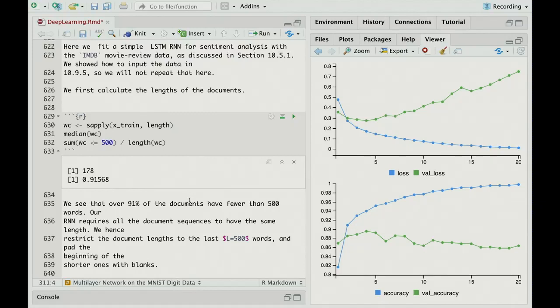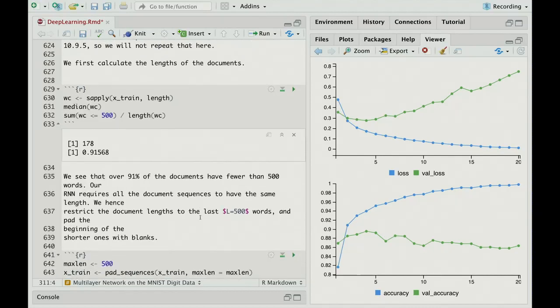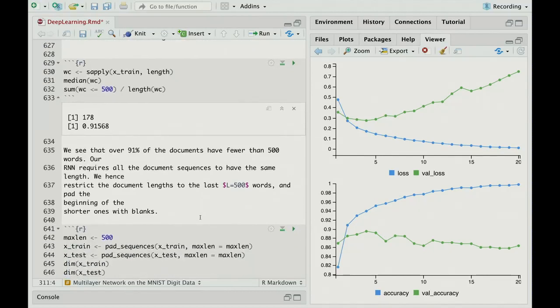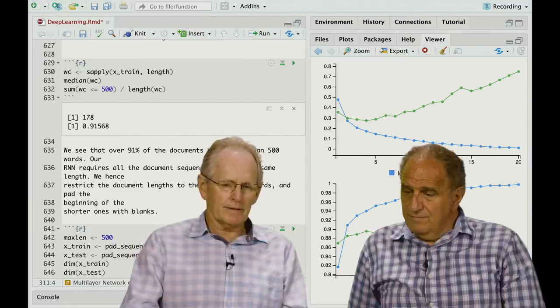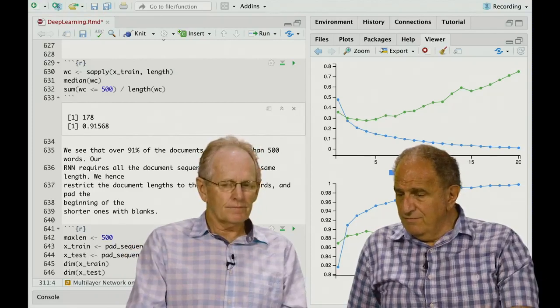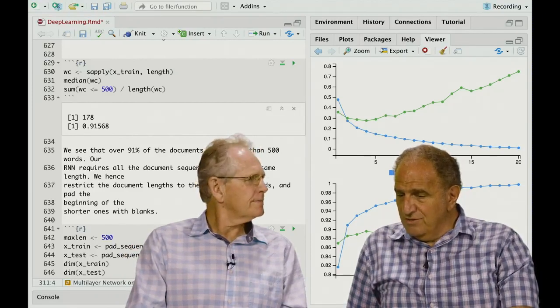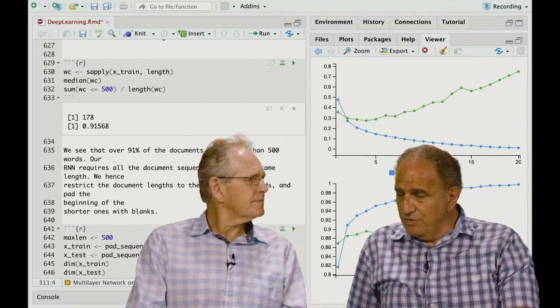And so based on this little exploration, we'll limit the words to be 500 words per review. And if the review is longer than that, we'll just truncate. And if it's shorter than that, we'll pad it with blanks. Just so I remember the idea of recurrent neural networks versus bag of words. Bag of words just use the presence or absence of a word, but now we're going to use the order in which they appear?